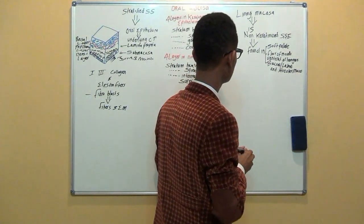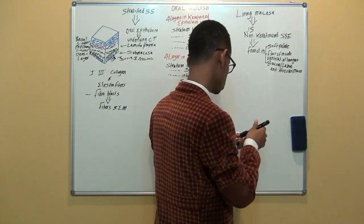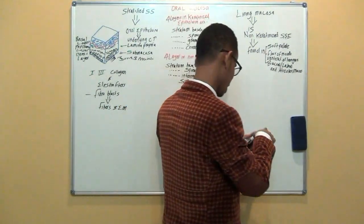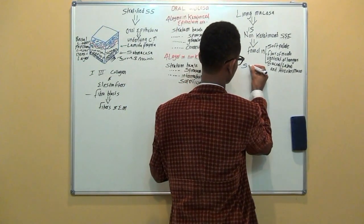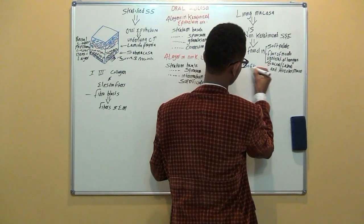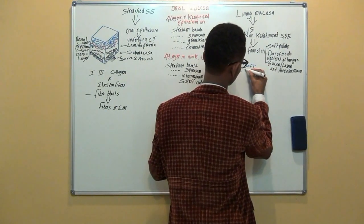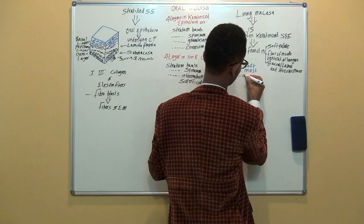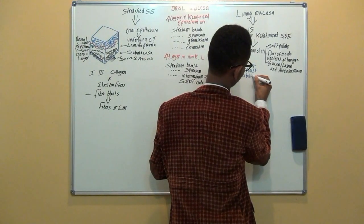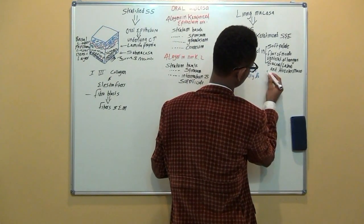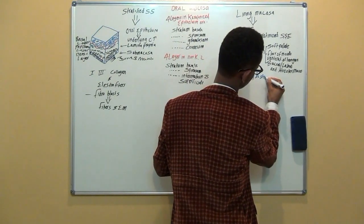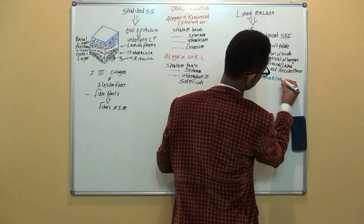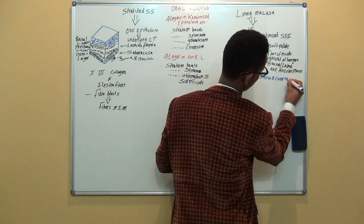The lining mucosa has three important characteristics. The first one is softness. The second is the ability to stretch and compress.